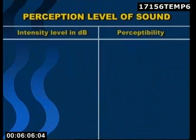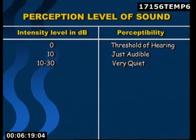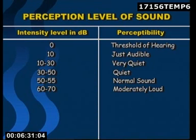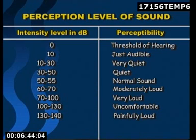Perception levels of different intensities of sound: 0 dB — threshold of hearing; 10 dB — just audible; 10–30 dB — very quiet; 30–50 dB — quiet; 50–55 dB — normal sound; 60–70 dB — moderately loud; 70–100 dB — very loud; 100–130 dB — uncomfortable; 130–140 dB — painfully loud; 140–180 dB — severely loud.